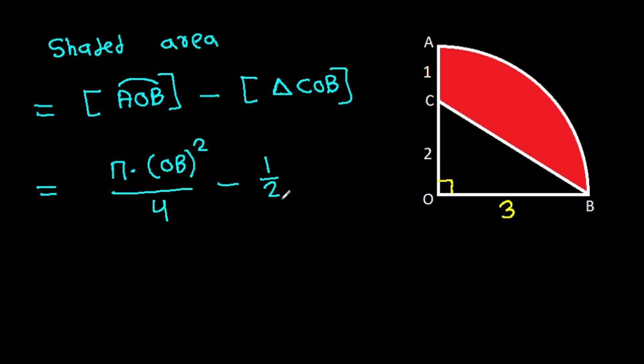It will be one over two times base OB times height OC. And it is pi times 3 squared over four, minus one over two times three times two. And two will get cancelled.